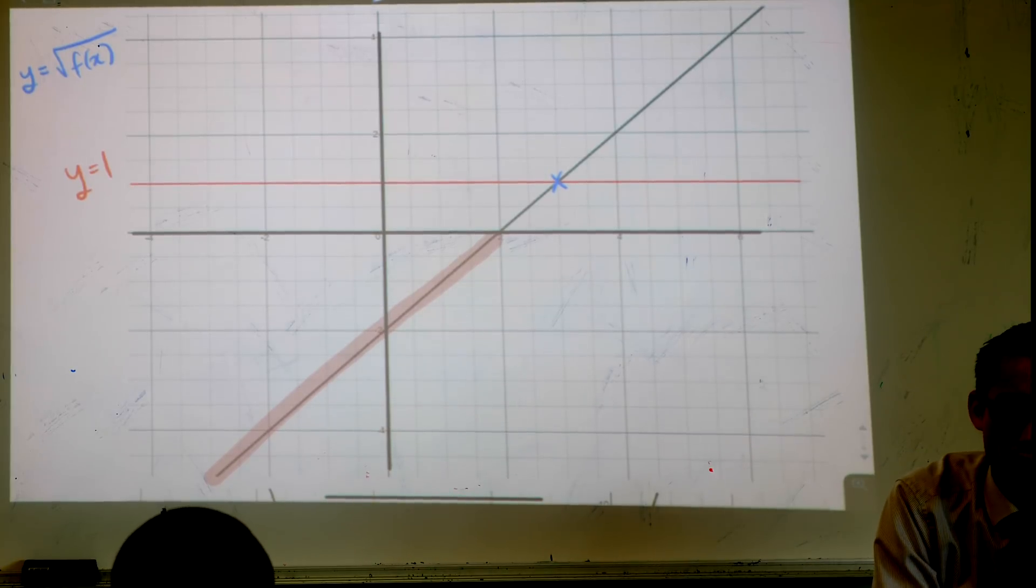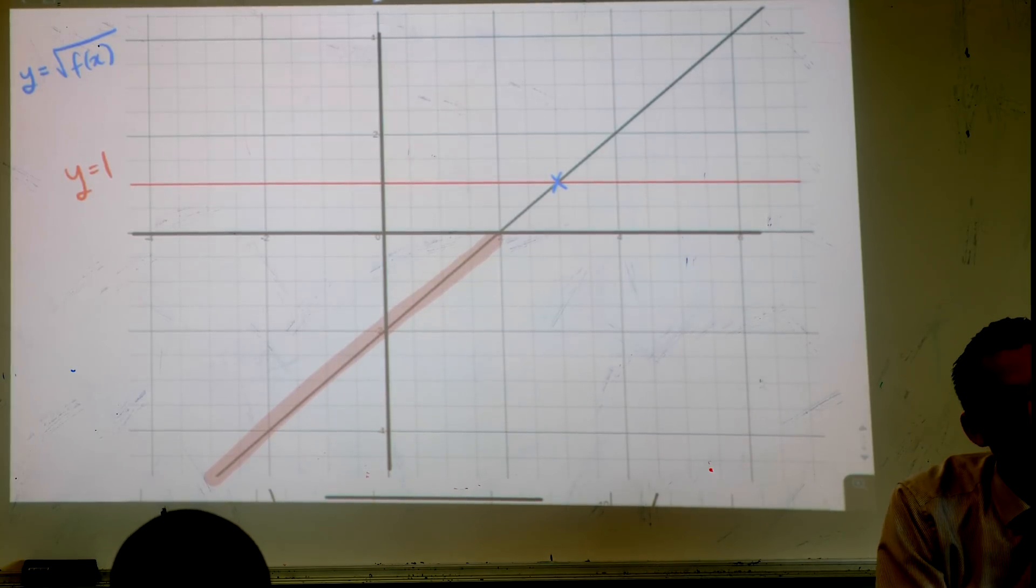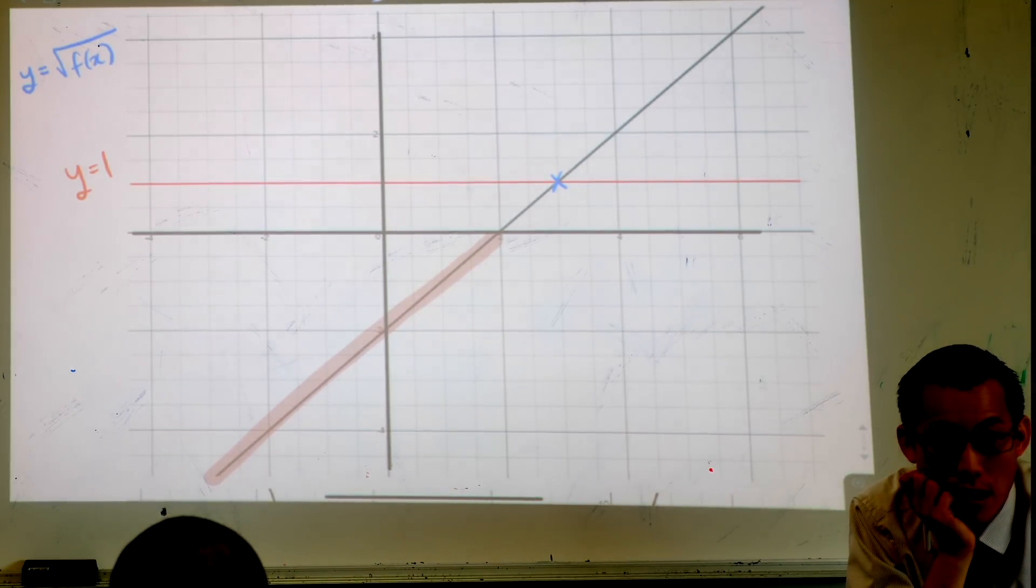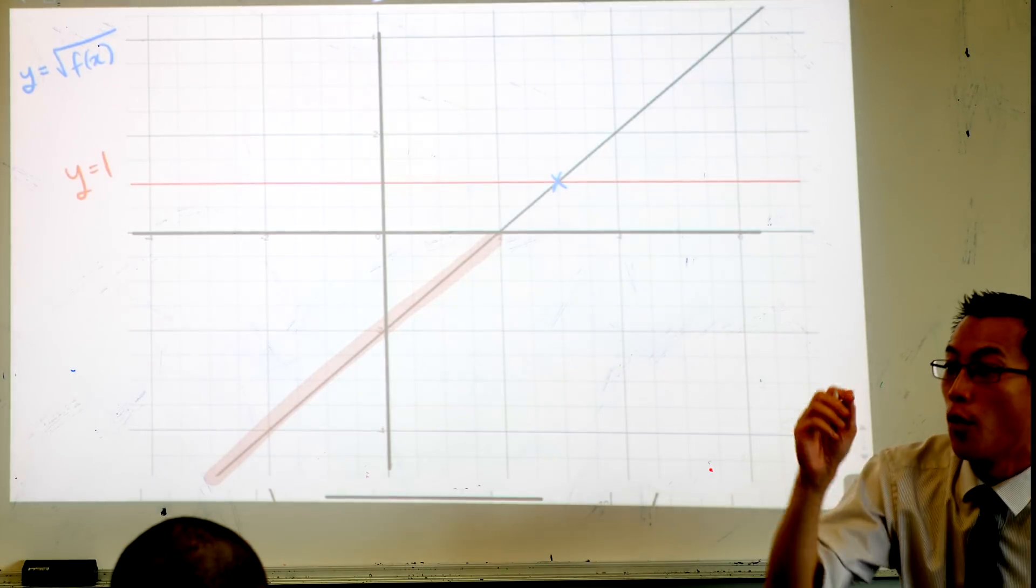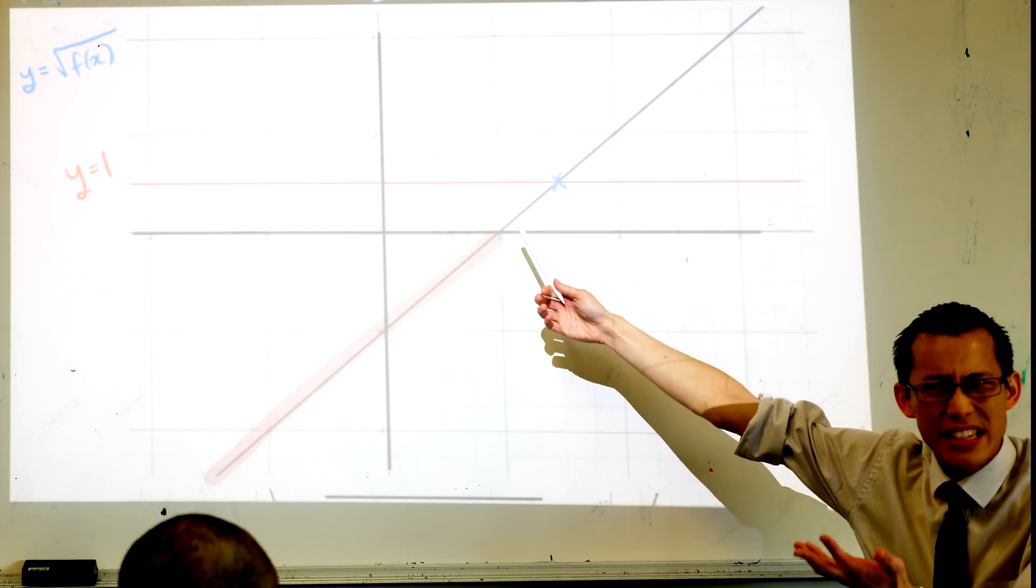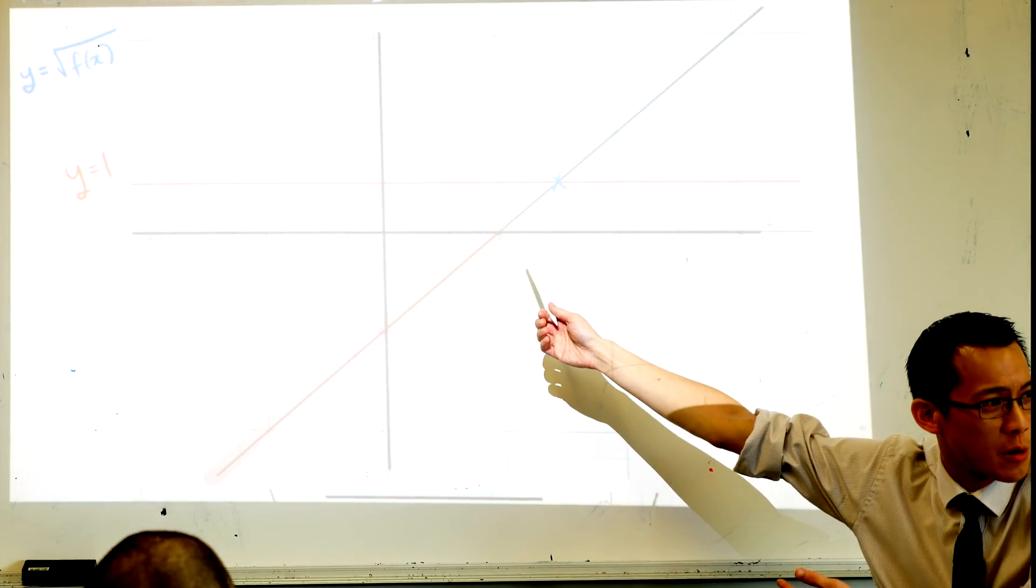Think back to all of the graphs and transformations we did in the last few lessons. What other values for this function are important? Not just one. The x-intercept is very important. For y equals 0, which is just there, right? Why is that significant? What's the square root of 0? Zero.